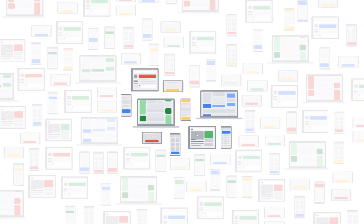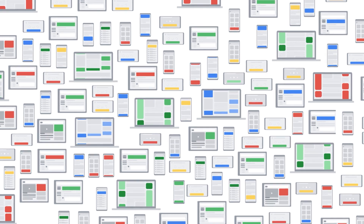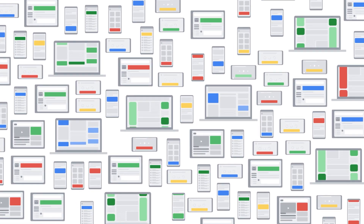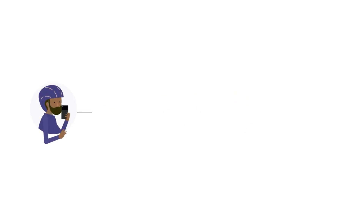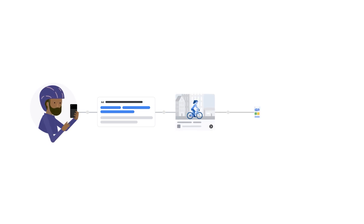By using Google Display ads to grow your digital strategy beyond search, your ads can show across 3 million relevant websites and apps, reaching 90% of internet users with text, images, and video that reflect your business. Whether or not you already run search ads, display ads can help you reach customers across their complex and multi-step journeys.